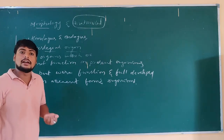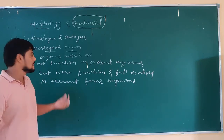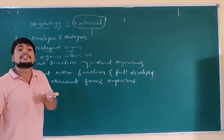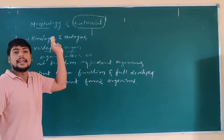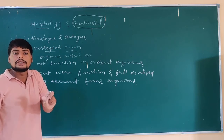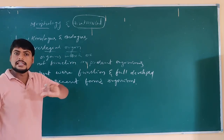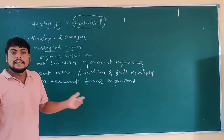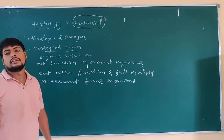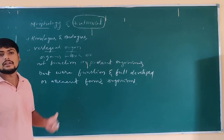These vestigial organs also show evidence of evolution. Why? Because the environmental conditions have changed when compared to the ancient period. The environmental condition is totally different today, and due to these changes, the organ's function also changed and it becomes non-functioning — that is a vestigial organ.